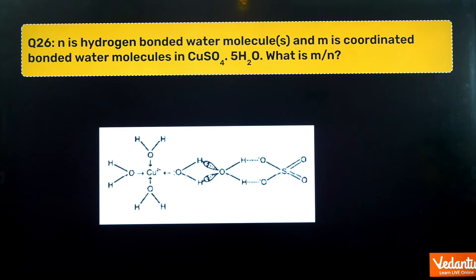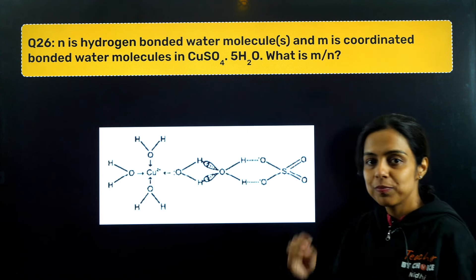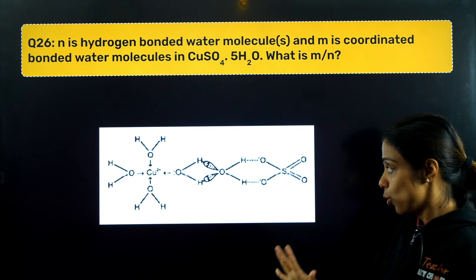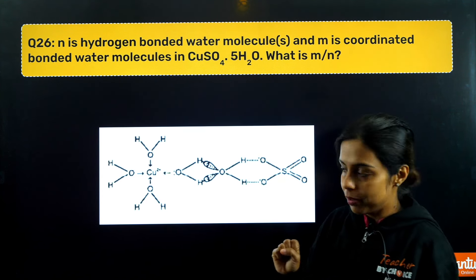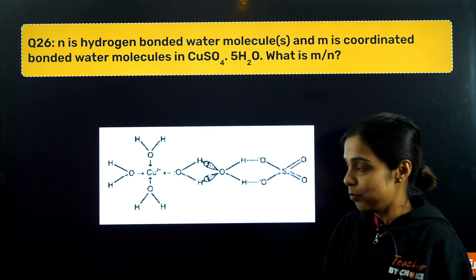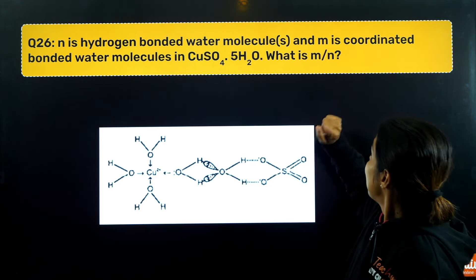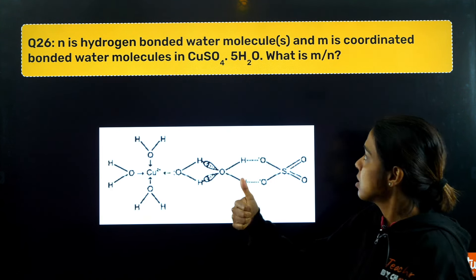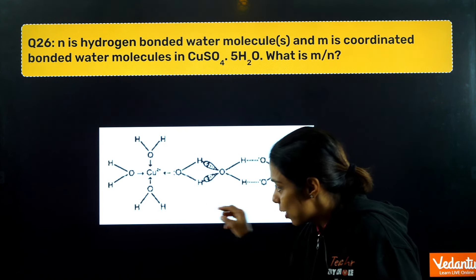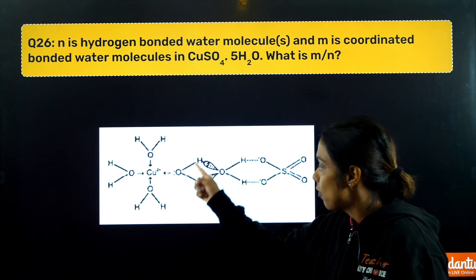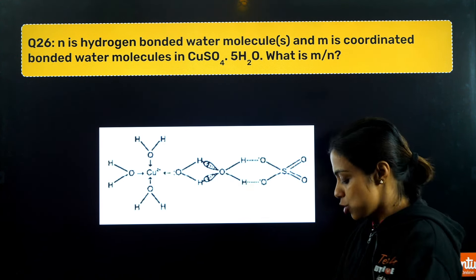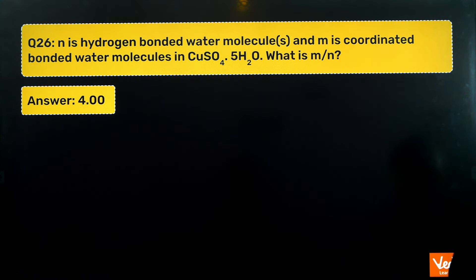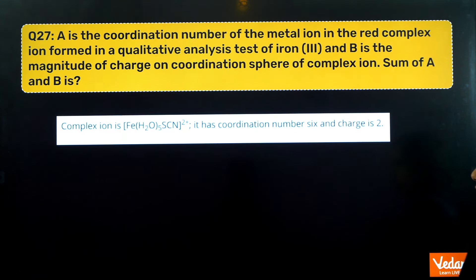In blue vitriol (CuSO₄·5H₂O), out of the five water molecules, four form coordinate bonds with the copper ion, and one water molecule is bonded via hydrogen bonding. M = coordinate-bonded water = 4, N = hydrogen-bonded water = 1. So M/N = 4. The answer is 4.